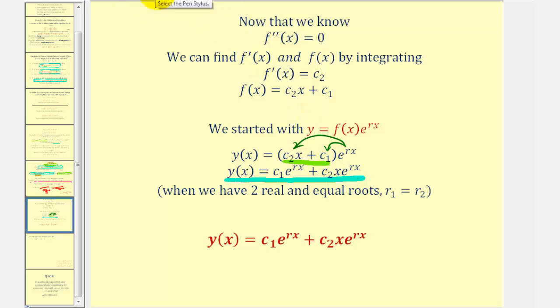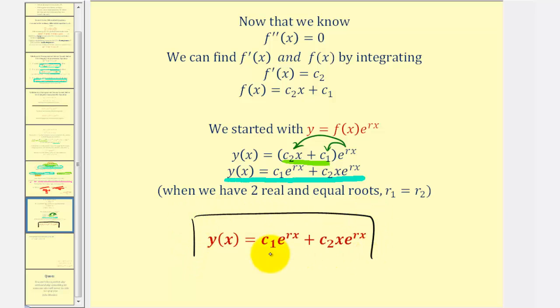And notice how this gives us our general solution when we have two real equal roots to our characteristic equation. This is where that extra factor of x comes from. So now we just need to remember that when solving the characteristic equation, if we have two real equal roots, our general solution must be in this form here. So let's go ahead and finish by looking at an example.